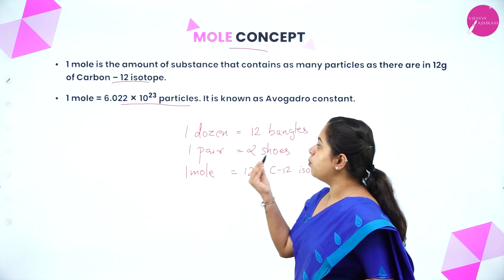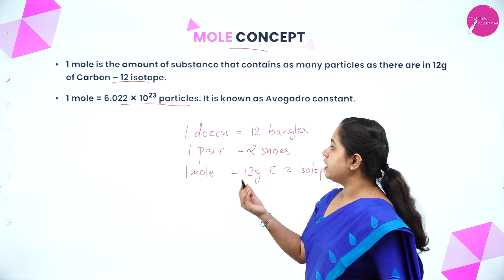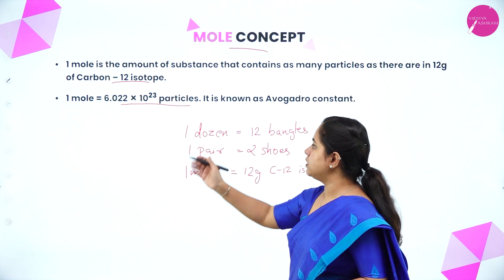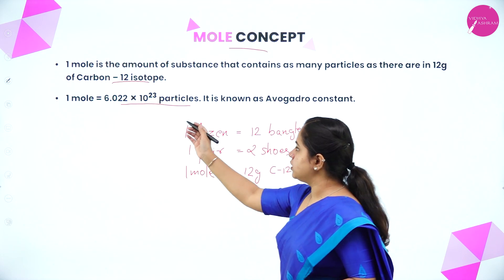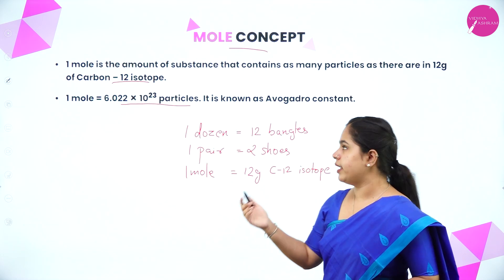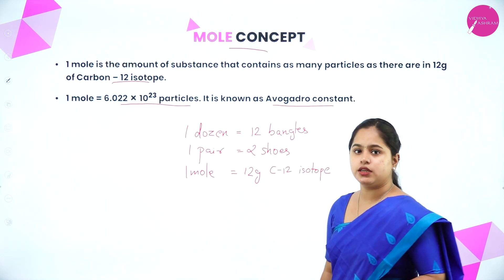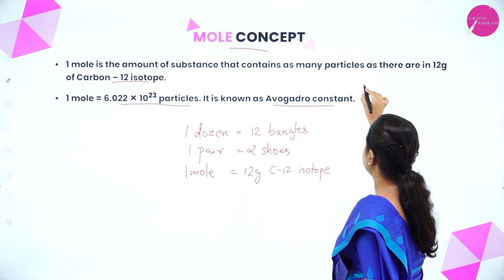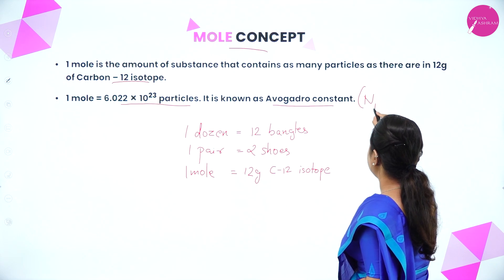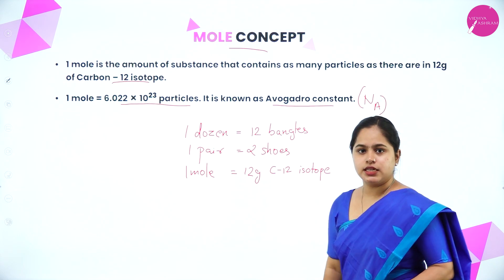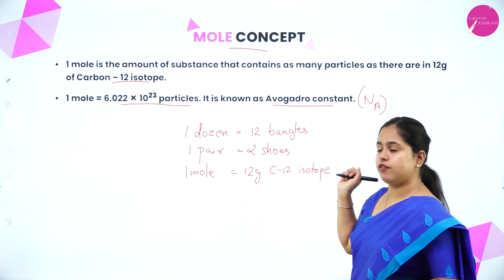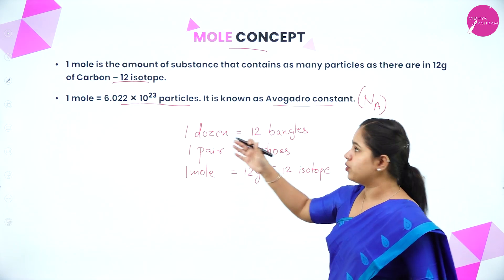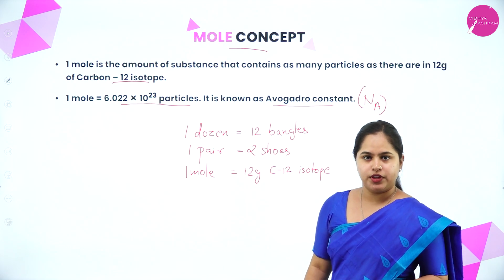So, in one mole of any substance there will be 6.022 × 10²³ particles. This number is called Avogadro's constant, or Avogadro's number, represented by the symbol Nₐ. Instead of writing the full number, you can just write it as Nₐ.